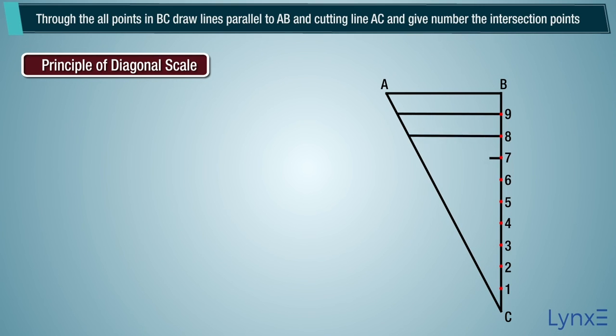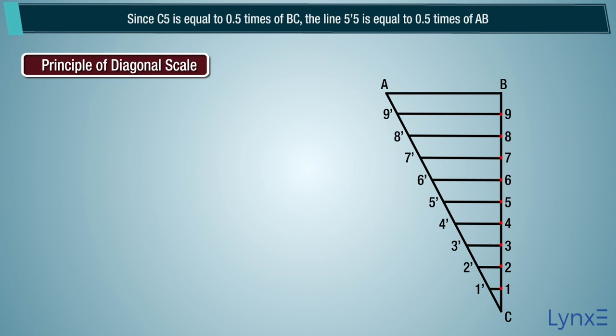Through all points in BC, draw lines parallel to AB and cutting line AC. Number the intersection points. Since C5 is equal to 0.5 times BC, the line 5'5 is equal to 0.5 times AB.